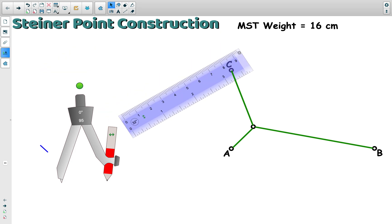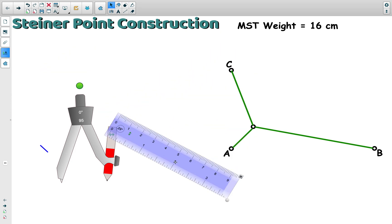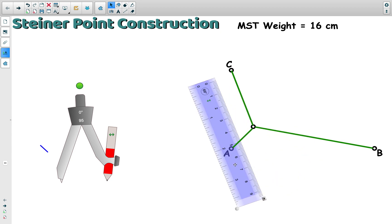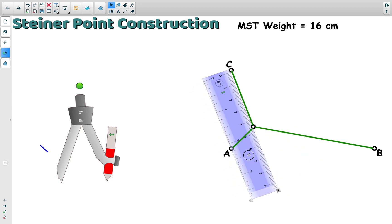And let's measure the branches of our network and see if we beat that 16 centimeter minimum spanning tree. So it looks like from the Steiner point to point C is about 4.5.